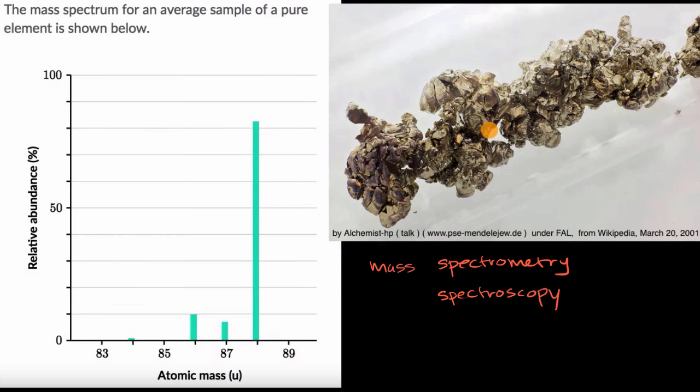It's a technique where you could take a sample of a substance and think about the various atomic masses of the different isotopes in that substance. And that's what we have right over here. They tell us the mass spectrum for an average sample of a pure element is shown below. So let's say it's this pure element.